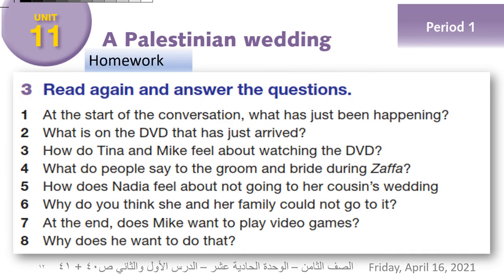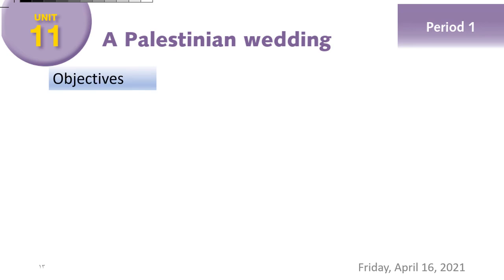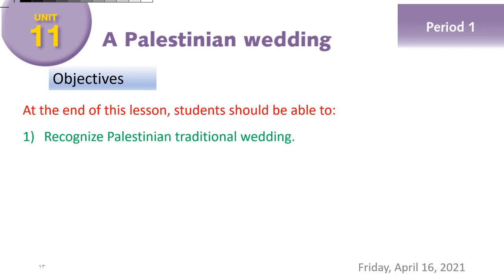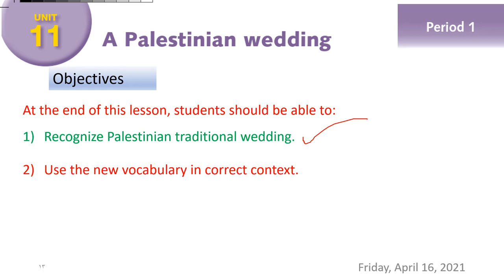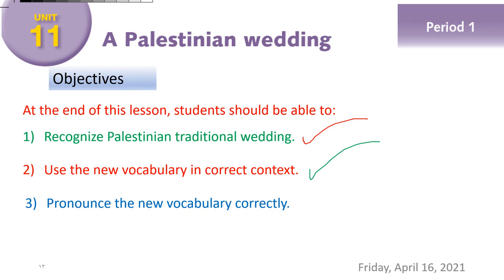Now let's go to our homework. Please write the questions on your notebook, اكتب الأسئلة على دفترك and answer them, وجاوب عليها. Take a clear photo and send it via Classroom. Now let's go to the final section — our objectives. We need to check whether we achieved our objectives or not. First objective: recognize Palestinian traditional wedding? I believe yes — what about you? Use the new vocabulary in a correct context? I believe yes. Pronounce the new vocabulary correctly? Yes. Now it is time for saying: have a nice day and goodbye.